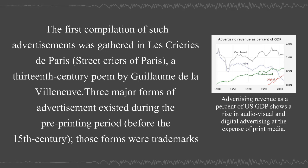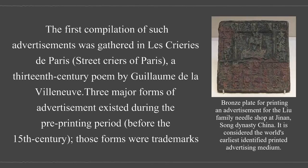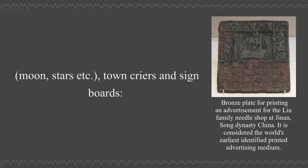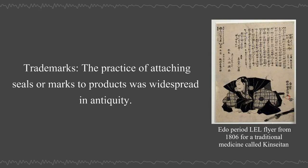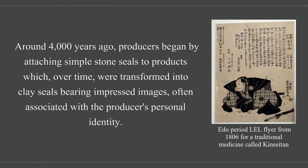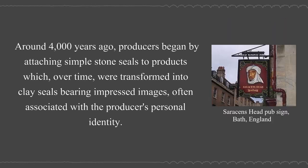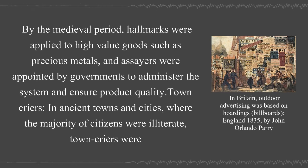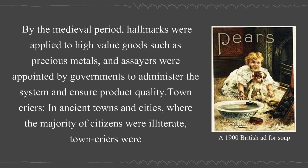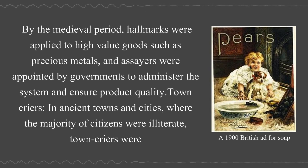Three major forms of advertisement existed during the pre-printing period before the 15th century: trademarks, town criers, and signboards. The practice of attaching seals or marks to products was widespread in antiquity. Around 4,000 years ago, producers began by attaching simple stone seals to products which, over time, were transformed into clay seals bearing impressed images often associated with the producer's personal identity. Some of the earliest use of makers' marks, dating to about 1300 BCE, have been found in India. By the medieval period, hallmarks were applied to high-value goods such as precious metals, and assayers were appointed by governments to administer the system and ensure product quality.